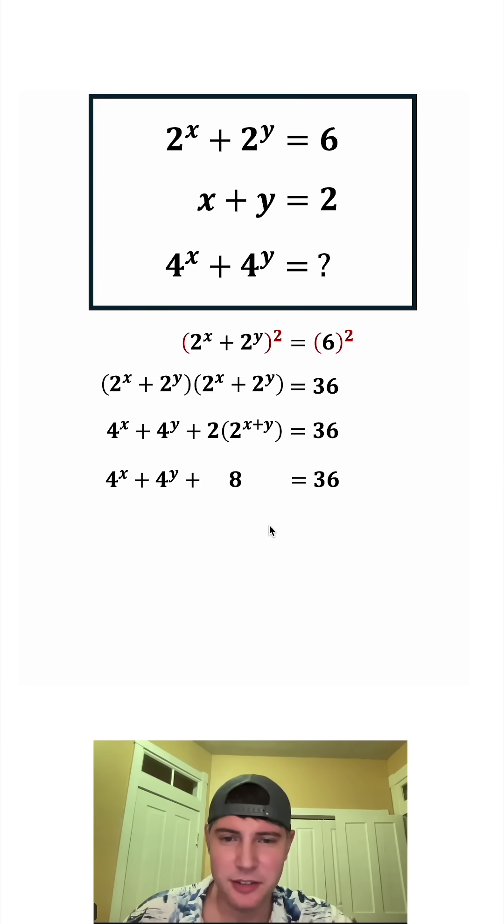Let's smush everything together and subtract 8 from both sides. These will cancel each other out. So the left-hand side is 4 to the x plus 4 to the y. And 36 minus 8 is equal to 28. 4 to the x plus 4 to the y is equal to 28.